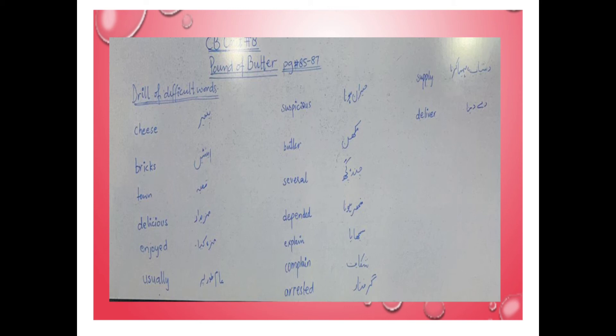Suspicious means hairaan raha gaya ya madhosh jaise aap pareshan ya hairan reh jana. Butter means makhan. Several means chand ya kuch. Dependent means minhasir hona ya jis ke upar aap rely kar rahe ho. Explain means samjhana. Complain means shikayat. Arrested means giriftar. Supply means muhaiya karna ya dastiyaab hona. Deliver means de dena ya aapko pohanchana.